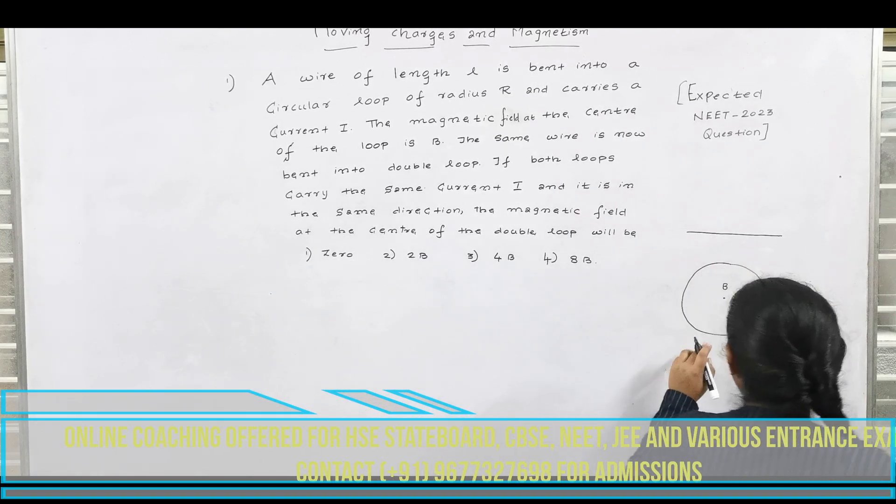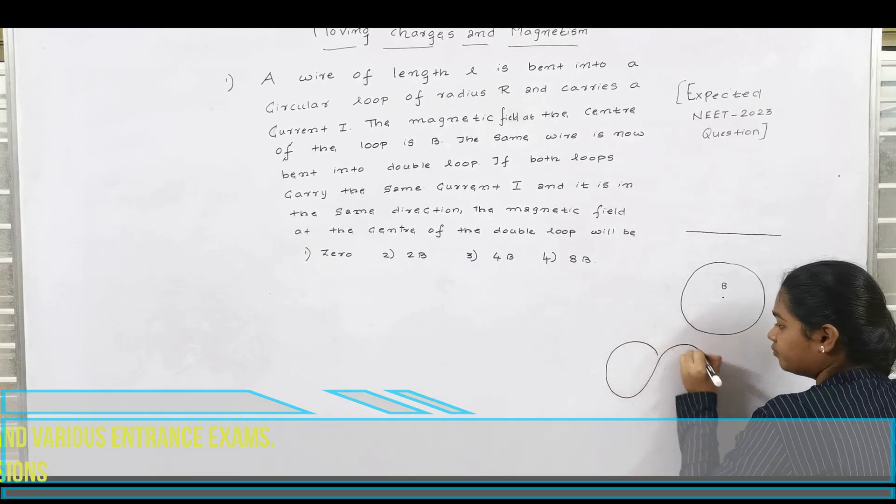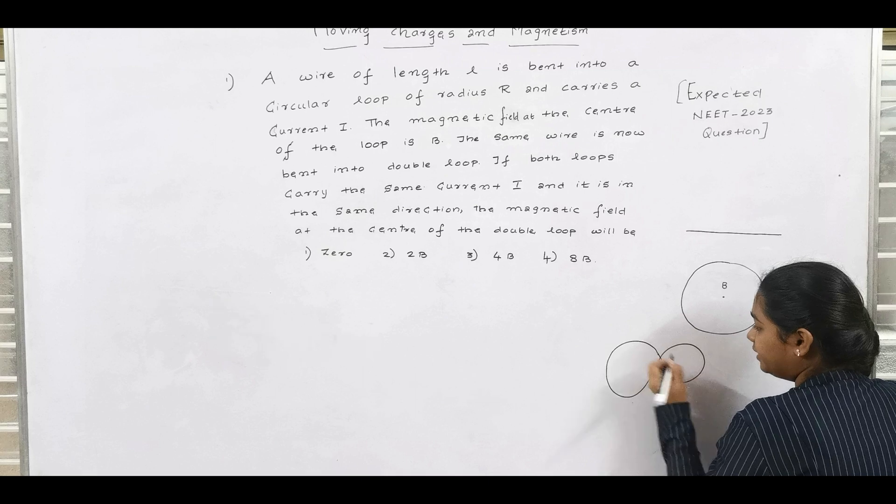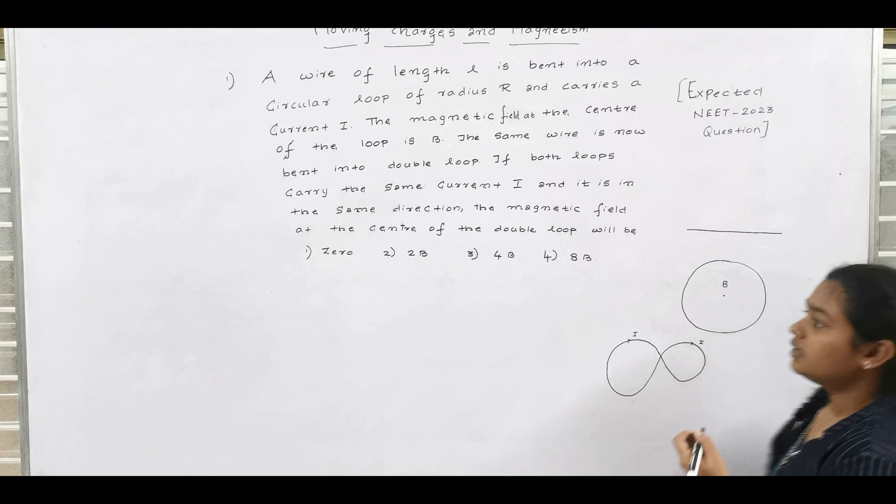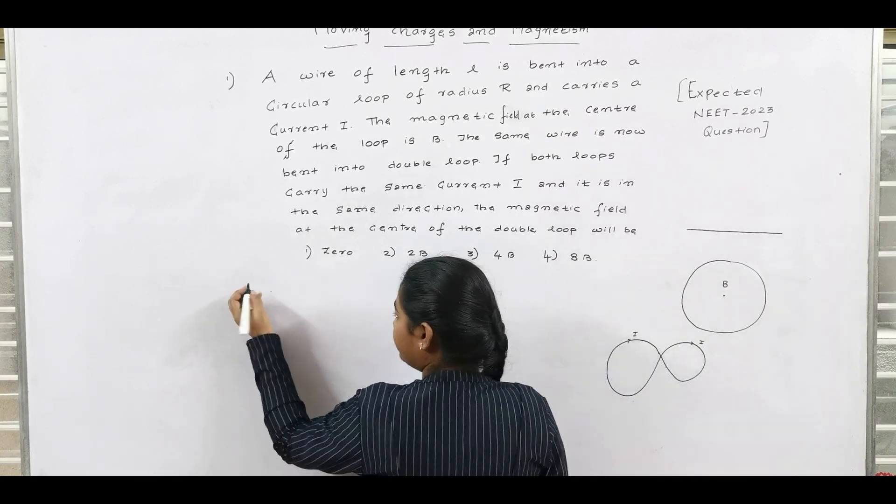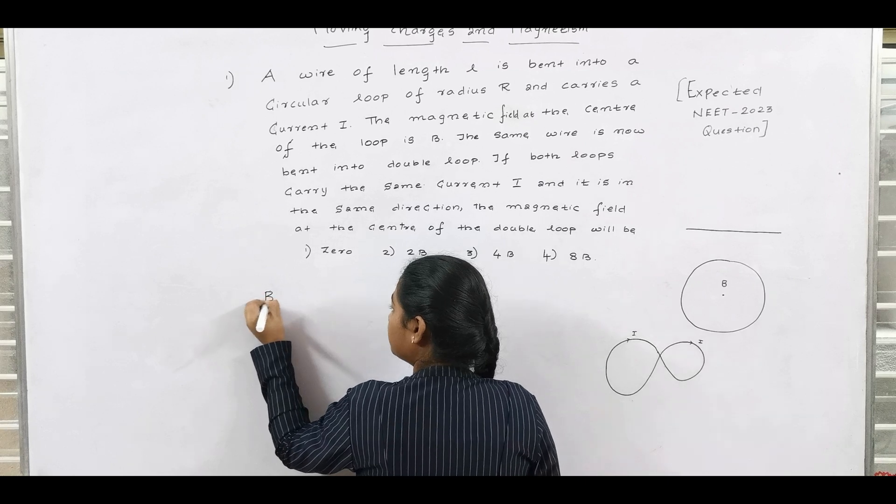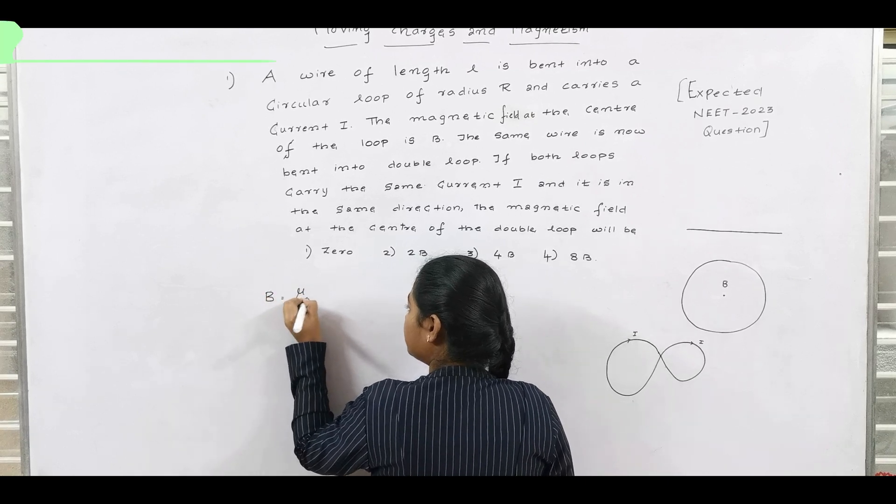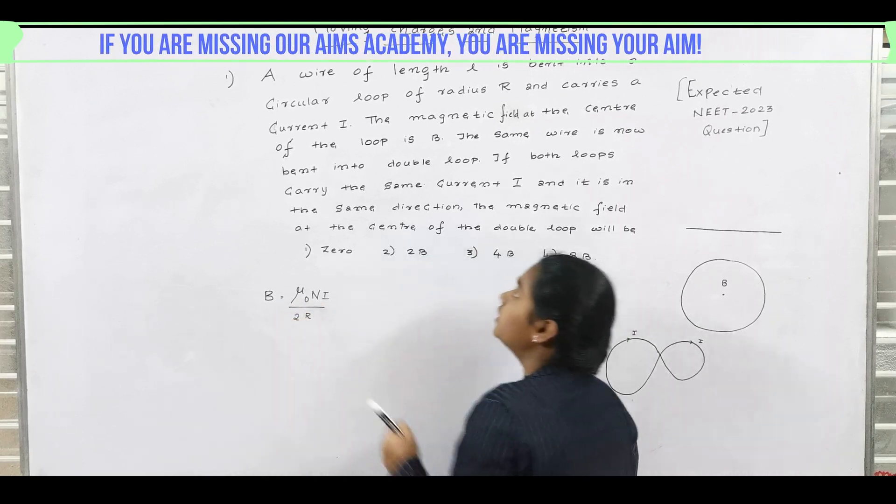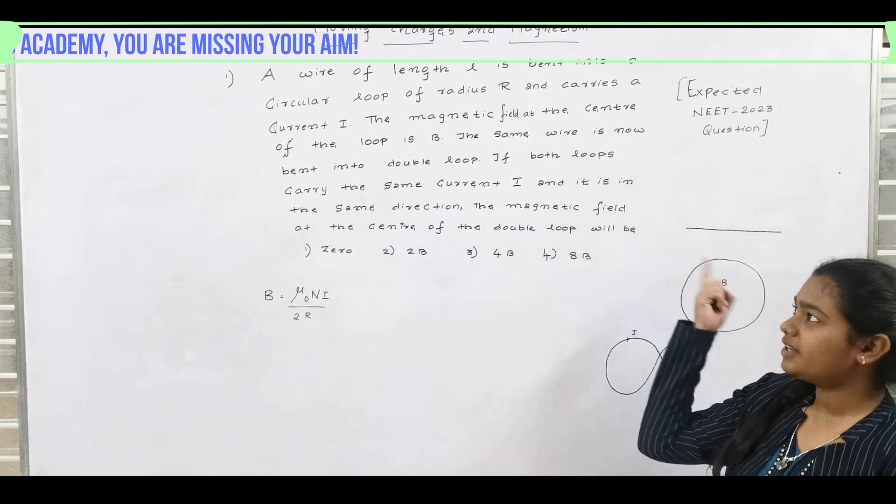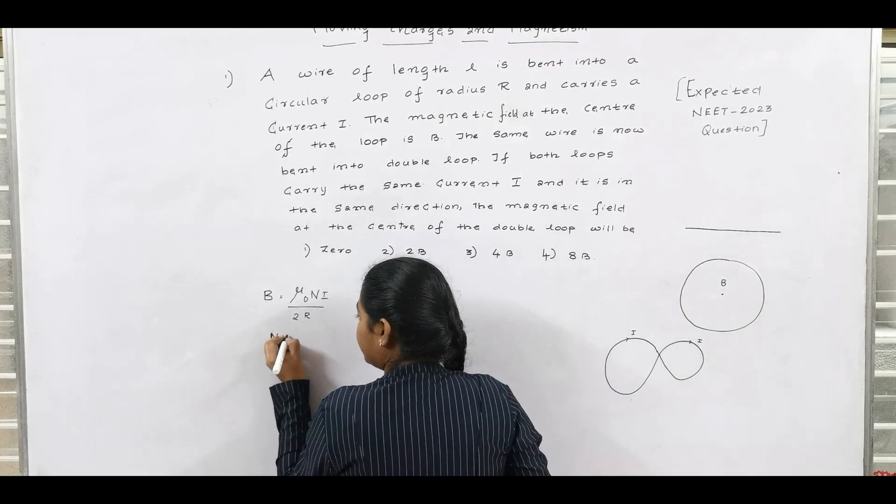The magnetic field at the centre of the double loop will be. Now they are taking the same loop and making it into a double loop. And it has the same current, I, in the same direction. So now we know the general formula for the magnetic field in a circular loop: B is equal to mu naught n i by 2r. Here in the first case they are given, they are only in a single loop. So the value of n is 1.